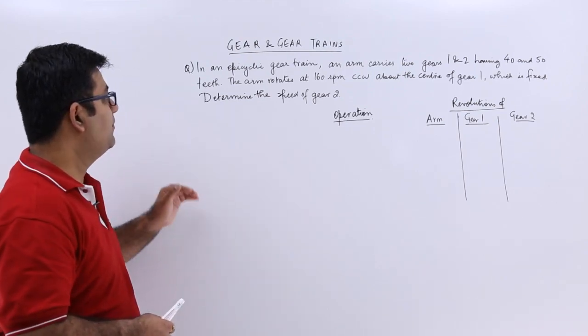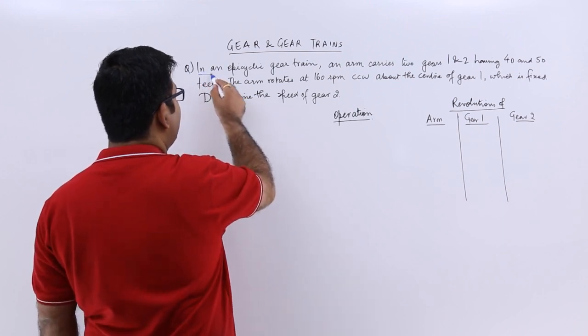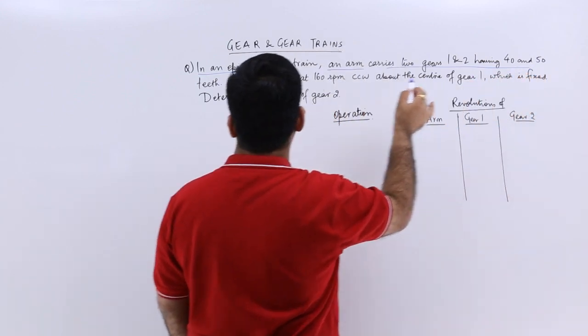Now let's look at a question on epicyclic gear train. The question says in an epicyclic gear train, an arm carries two gears 1 and 2 having 40 and 50 teeth.